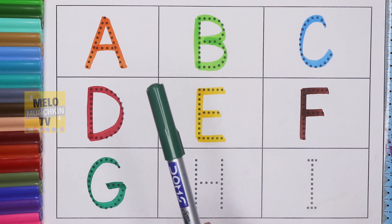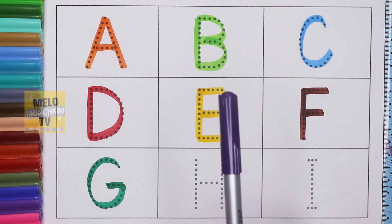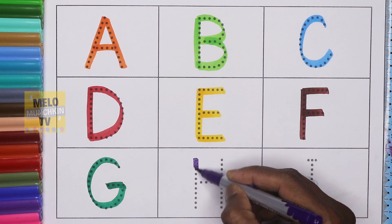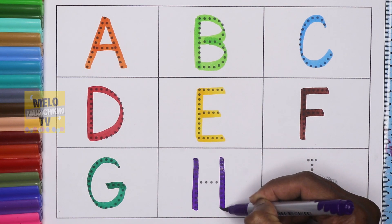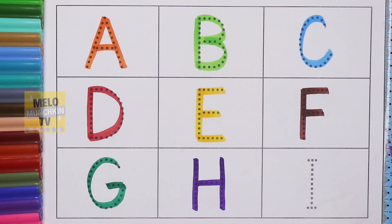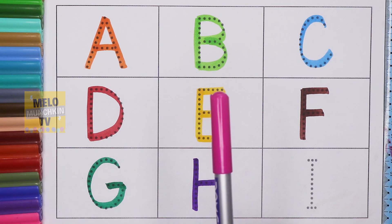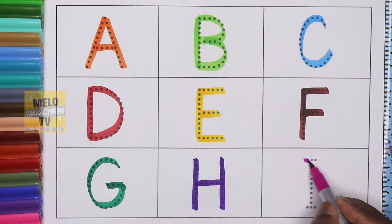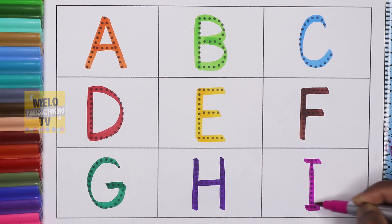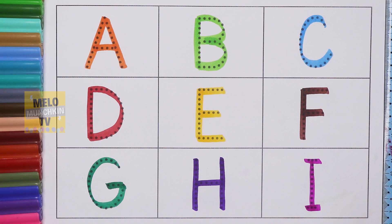Next I'll use purple color to write letter H. H for house. This is purple color. And lastly I'll take dark pink color to write letter I. I for ice cream. So hence we've completed our alphabets from A to I.